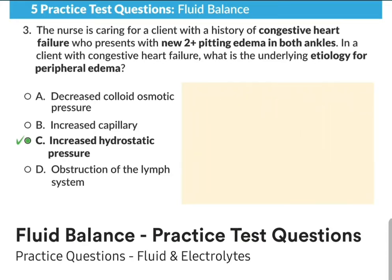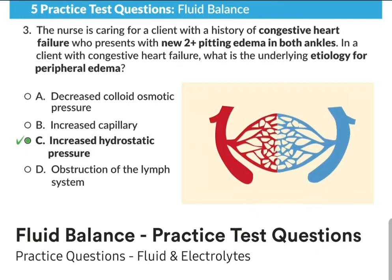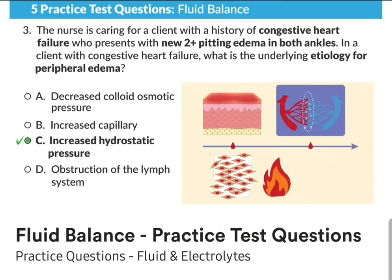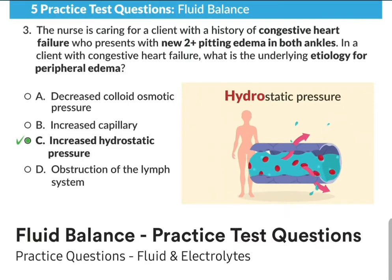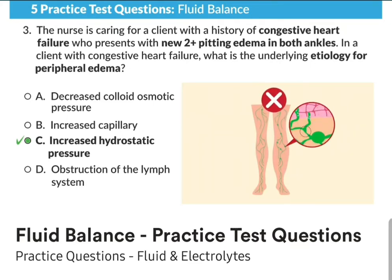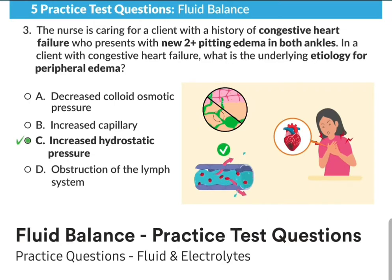Option B, increased capillary permeability, is very tricky but wrong. Increased capillary permeability means very leaky capillaries — the connection between the arteries and veins. This is typically seen with severe inflammation or tissue damage, like severe burns. Option D, obstruction of the lymph system, was close but incorrect — there is no obstruction of the lymphatic system in heart failure, only increased fluid pressure.